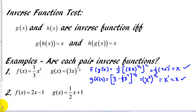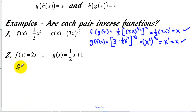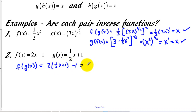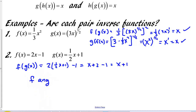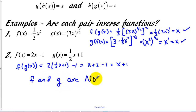Let's check the next pair. For f of g of x, that's going to be 2 times one-half x plus 1, minus 1. Distributing the 2 gives x plus 2, then minus 1 gives x plus 1. That's not a plain x, so f and g are not inverses.